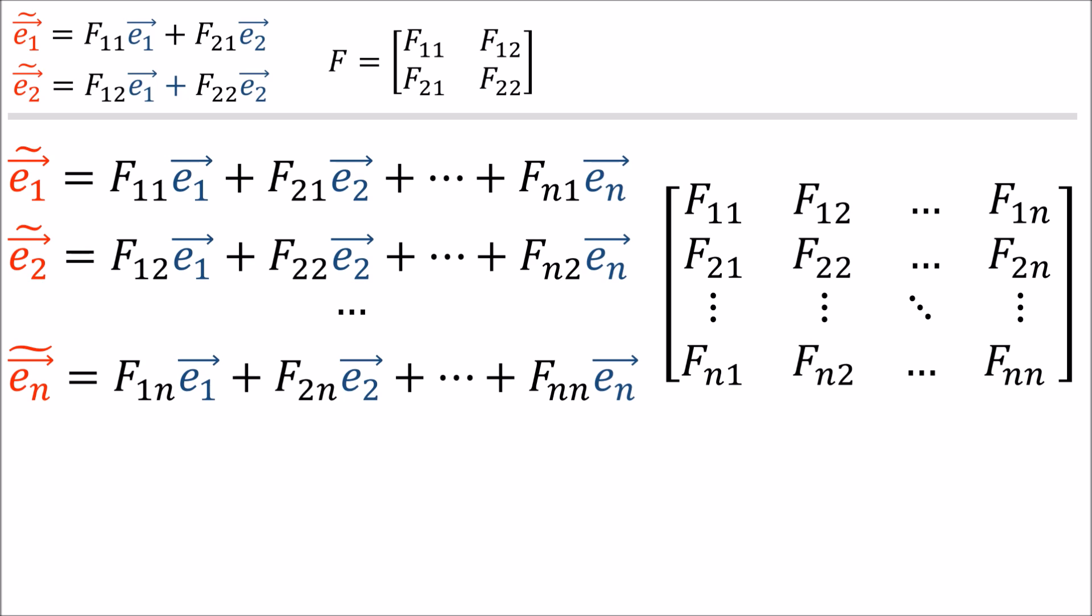Looking at these equations for the forward transform, F_{1,2} tells us how much of e_1 is in ẽ_2, and likewise, F_{j,i} tells us how much of e_j ends up in ẽ_i.